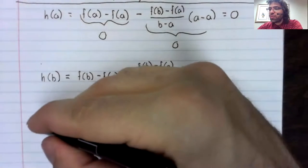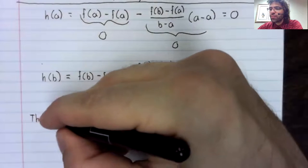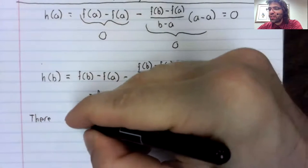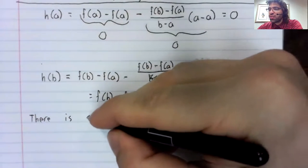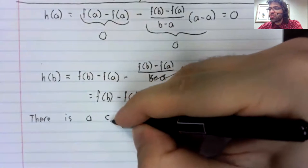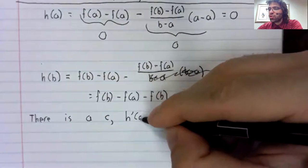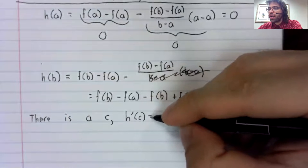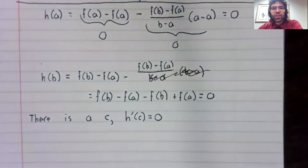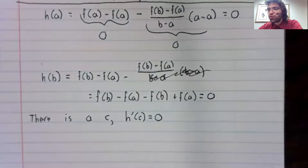And Rolle's theorem says there is a number c such that h prime of c equals zero.